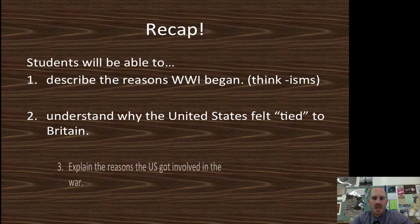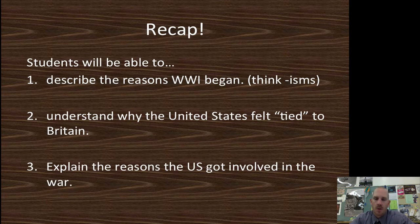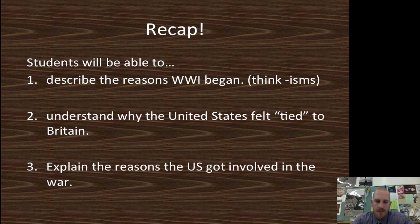Let's recap. You should be able to describe the reasons World War I began — think the murder of Archduke Franz Ferdinand by Gavrilo Princip, the assassination. Number two, understand why the United States felt tied to Britain: the economic system, the language, and the government style. And number three, explain the reasons the U.S. got involved in war — two billion dollars, even in 1917, is a lot of money, and we really wanted to make sure we'd get that money back. If you have any questions, let me know. Find me in class, shoot me an email. Thanks for watching, and we'll see you next time.